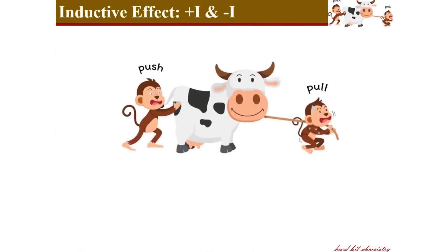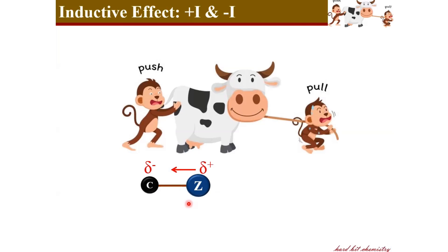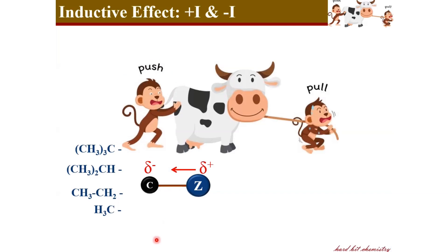Now we will see some different atoms and groups which impart plus I and minus I effects. For a bond between carbon and atom Z, if Z pushes the electron pair away from it, Z becomes slightly positively charged and the carbon becomes slightly negatively charged. Alkyl groups — trialkyl, dialkyl, and monoalkyl — are examples of plus I imparting groups, and the strength of their plus I effect decreases in that order.